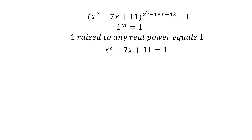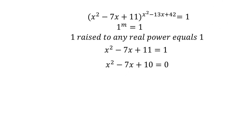Once x squared minus 7x plus 11 is equal to 1, the entire equation is satisfied, because the left hand side will equal 1 and the right hand side is 1. So now we solve x squared minus 7x plus 11 equals 1. Let's group everything on one side: x squared minus 7x plus 10 equals 0.